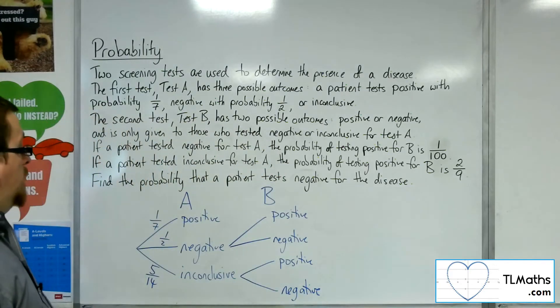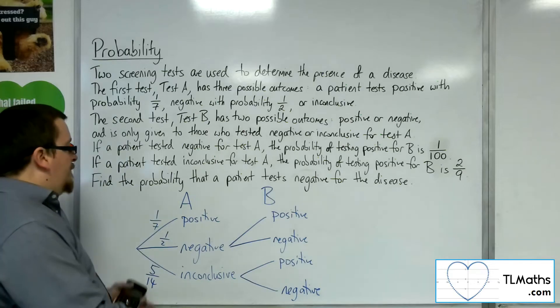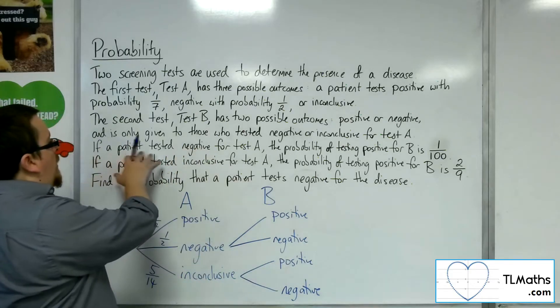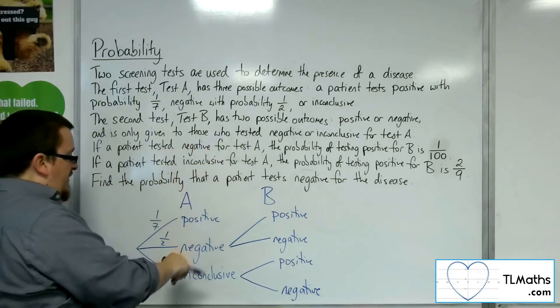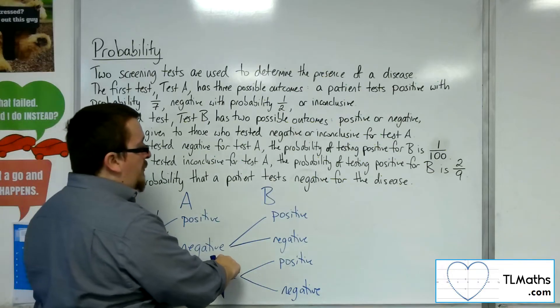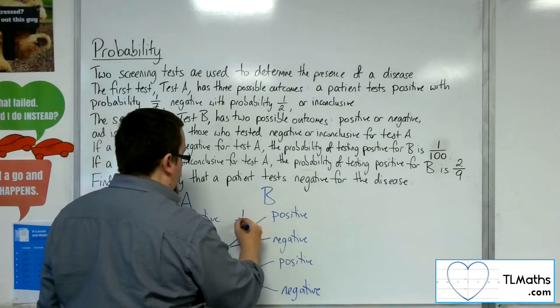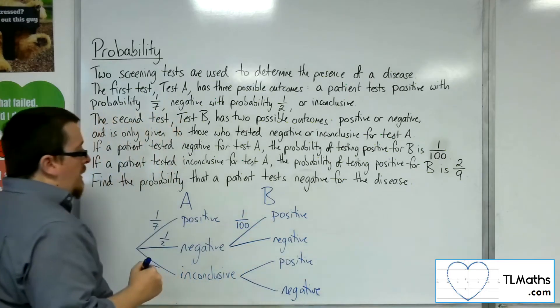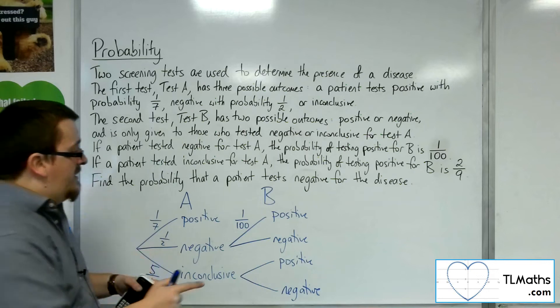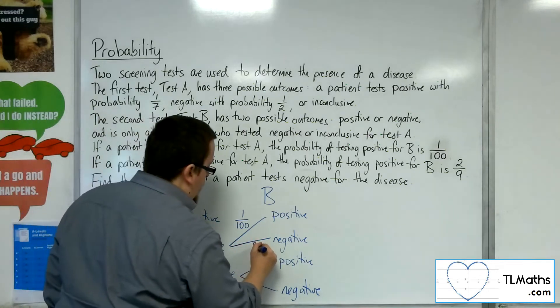If a patient tested negative for test A, the probability of testing positive for test B is one over a hundred. Okay, so that means the probability of testing negative here would be ninety-nine over a hundred.